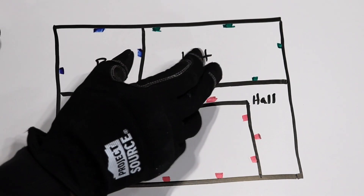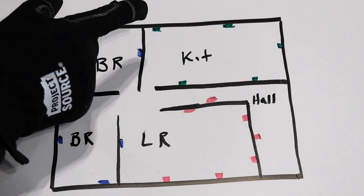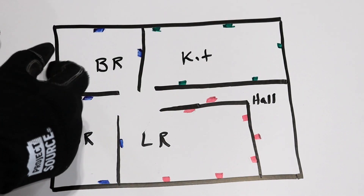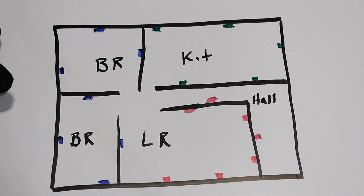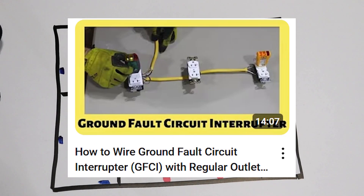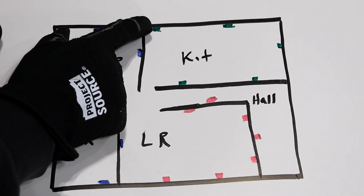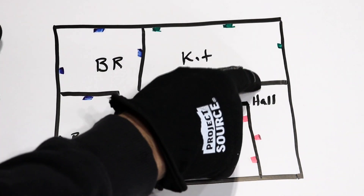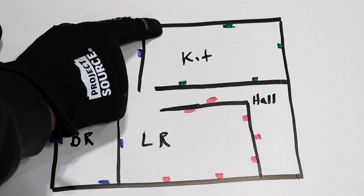Let's change gears and analyze kitchen outlets first. If you have outlets in a kitchen, bathroom, garage, or any outdoor outlets, they have to be GFCI protected. A GFCI circuit is wired such that every outlet after the GFCI outlet — even if they're not GFCI outlets themselves — are still GFCI protected.